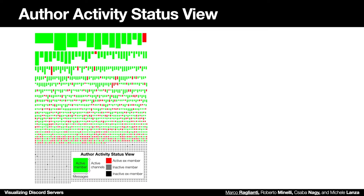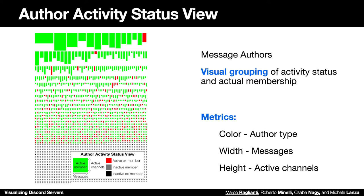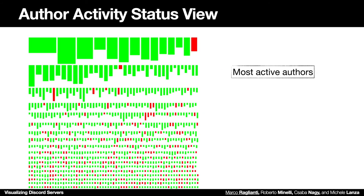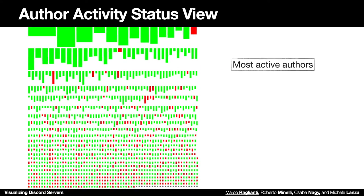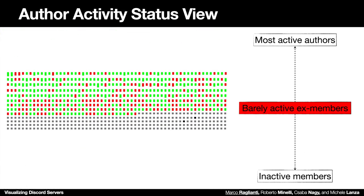In the author activity status view, we can see message authors that are visually grouped by activity status and membership status. In particular, we map author type on the color and two different activity metrics on width and height. We have on the top the most active authors and on the bottom inactive members. In the middle, we can find a frontier where barely active ex-members can be found. Those can be further investigated, for example, with respect to questions like: why did they leave the server?